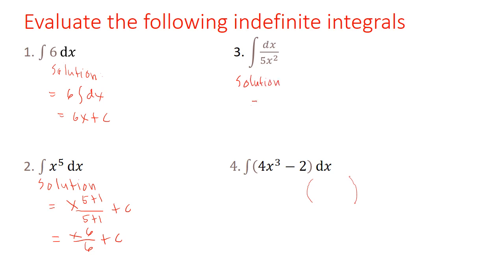Number three: write this in the form of one-fifth integral of x minus 2 dx so that you can use the power formula. This equals one-fifth times x minus 2 to the power, applying the rule to get x to the power minus one, all over minus one, plus C.